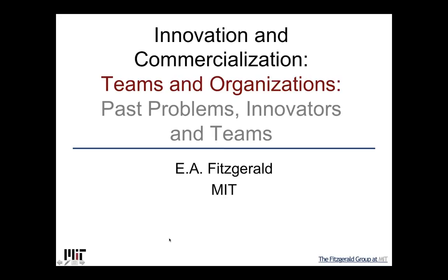In this lecture we'd like to cover past problems associated with organizations. Now that we've built this model, it's fairly easy to see typical problems in corporations and universities. Using the model in that way, we'll start from the bottom up — starting with innovators and teams — and then in the second part of this lecture, talk about what corporations and universities can do to improve. First we'll cover the problems graphically.